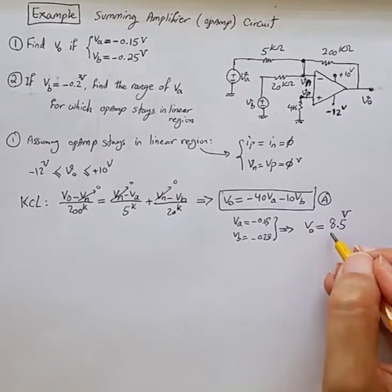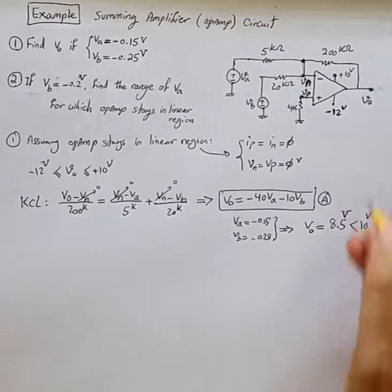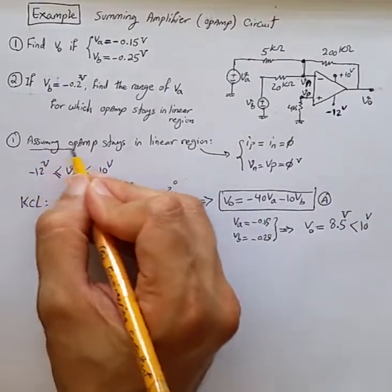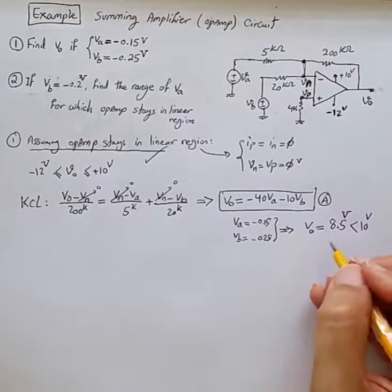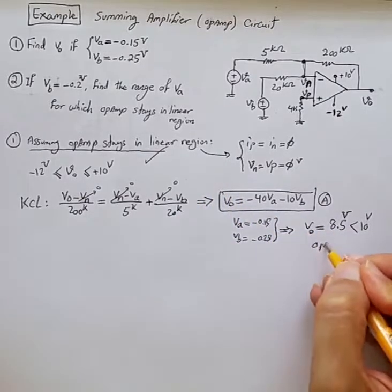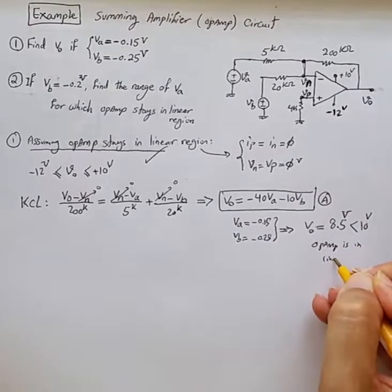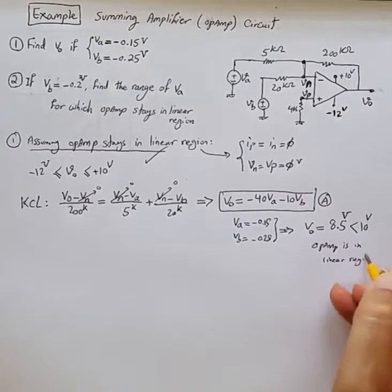And the good news is this value is less than 10 volts supply. So it means the assumption is valid because we assumed that the op-amp stays in linear region. So the op-amp is operating in linear region.